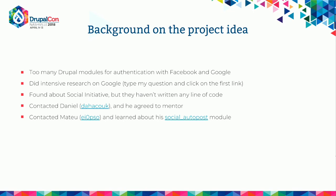The modules were working differently — one was using the email address, the other was using the user ID, which was very confusing. That problem contributes to the idea that Drupal is hard to use, and I didn't like that. There should be an easier way to connect to providers like Facebook and Google without going through all these steps. So I did intensive research — I went to Google, typed my question, and clicked the first link, which was about the Drupal Social Initiative. These guys had created this group in 2012 with all this idea of creating authentication with a common API, auto-posting, all the cool things I was thinking about. But there was a small problem: they didn't write a single line of code during those four years.